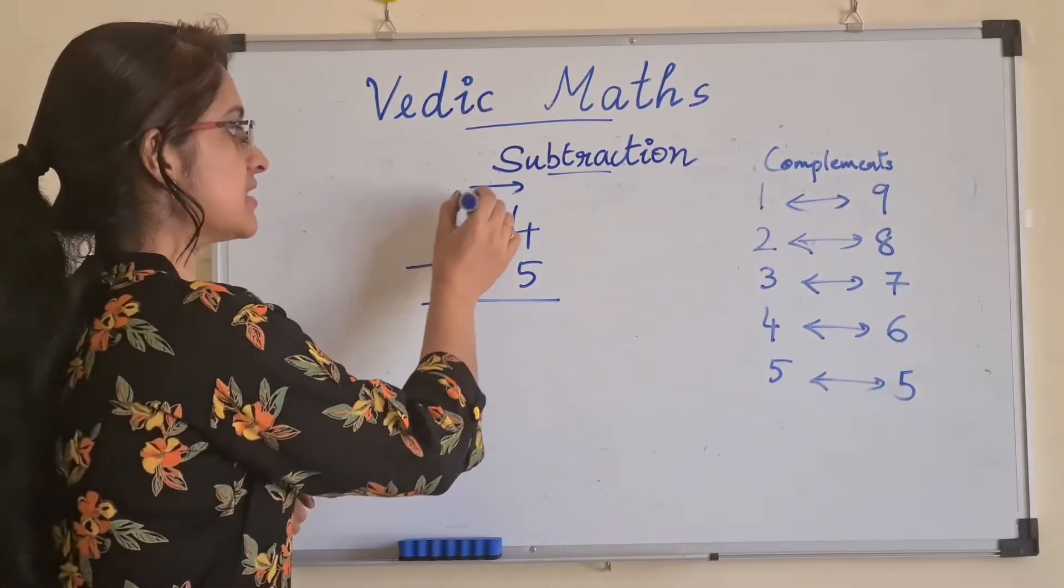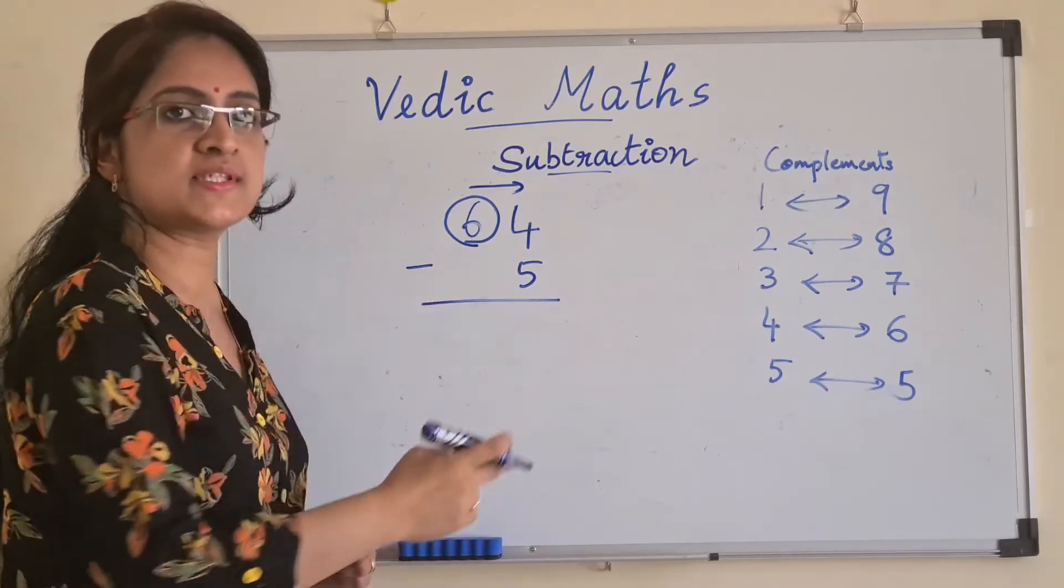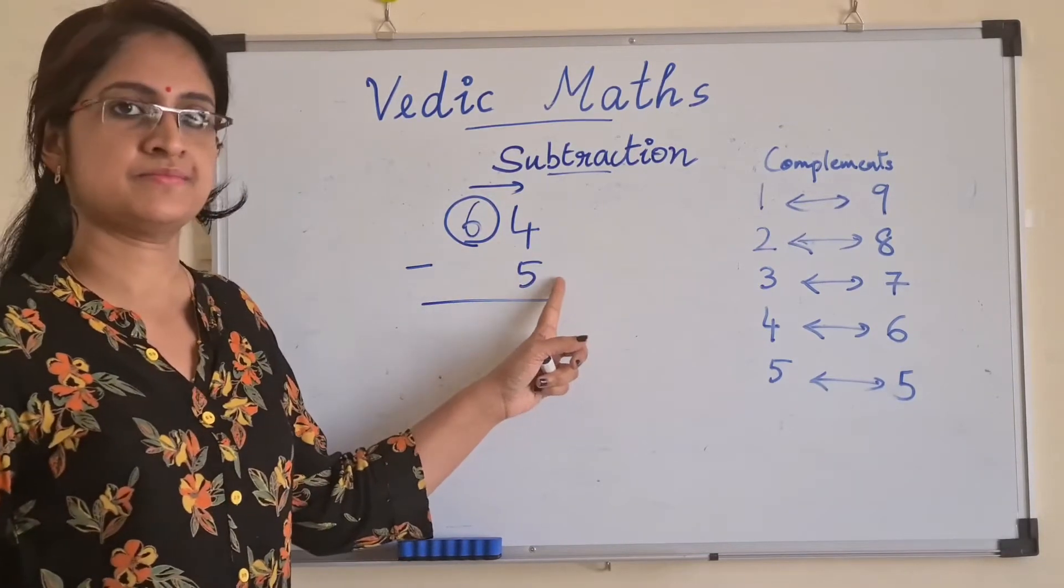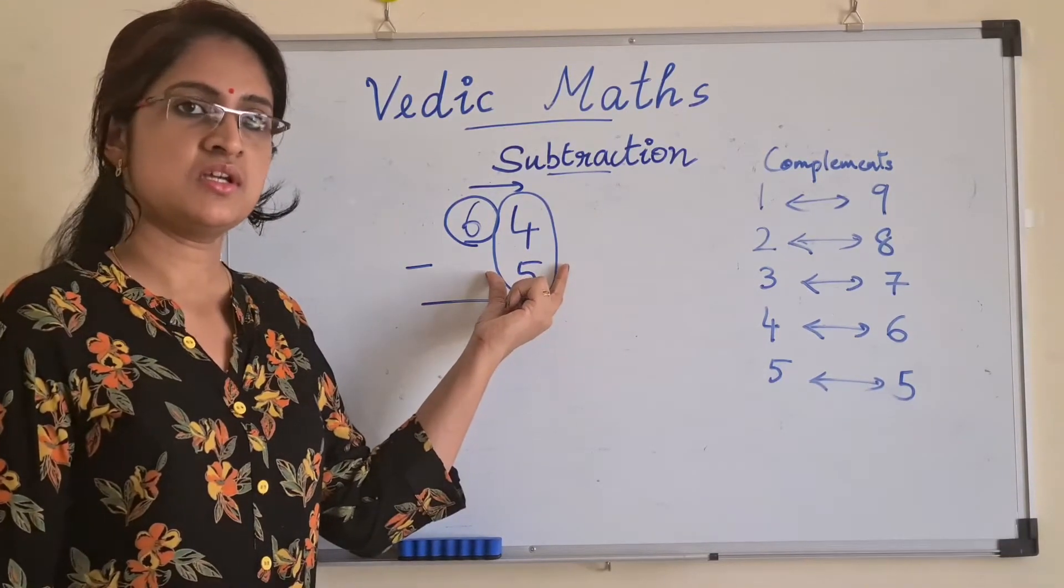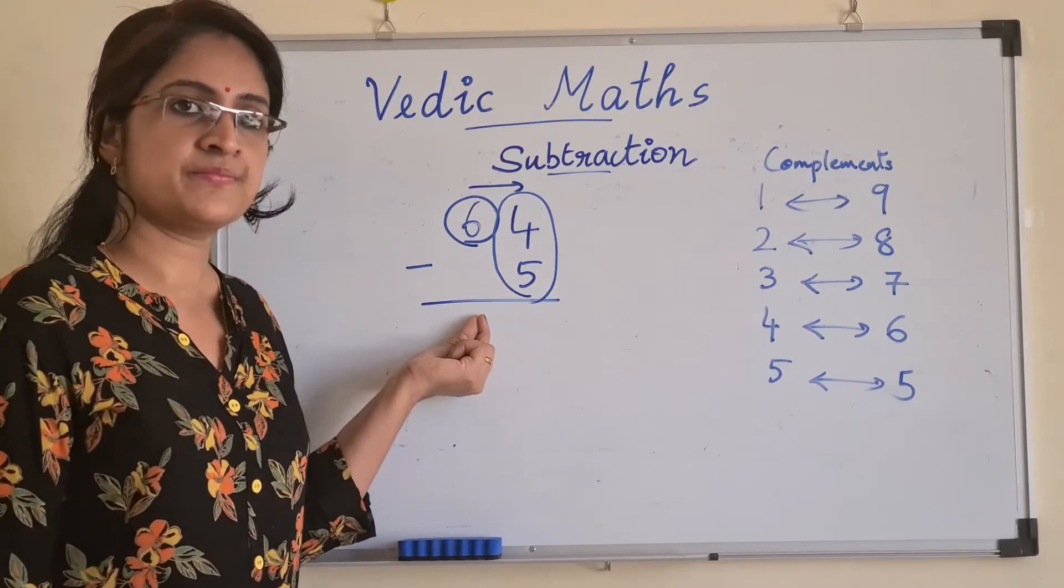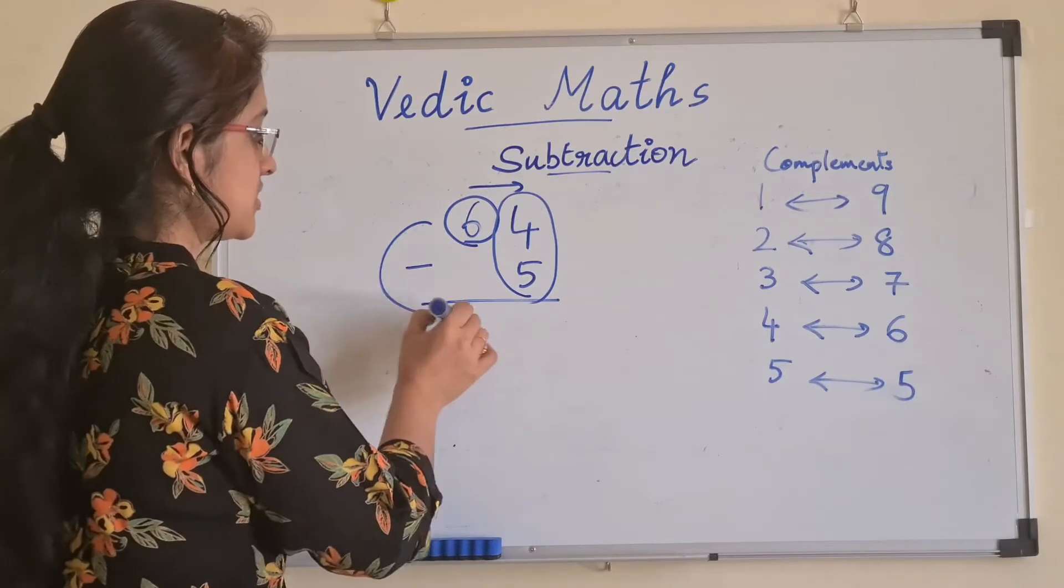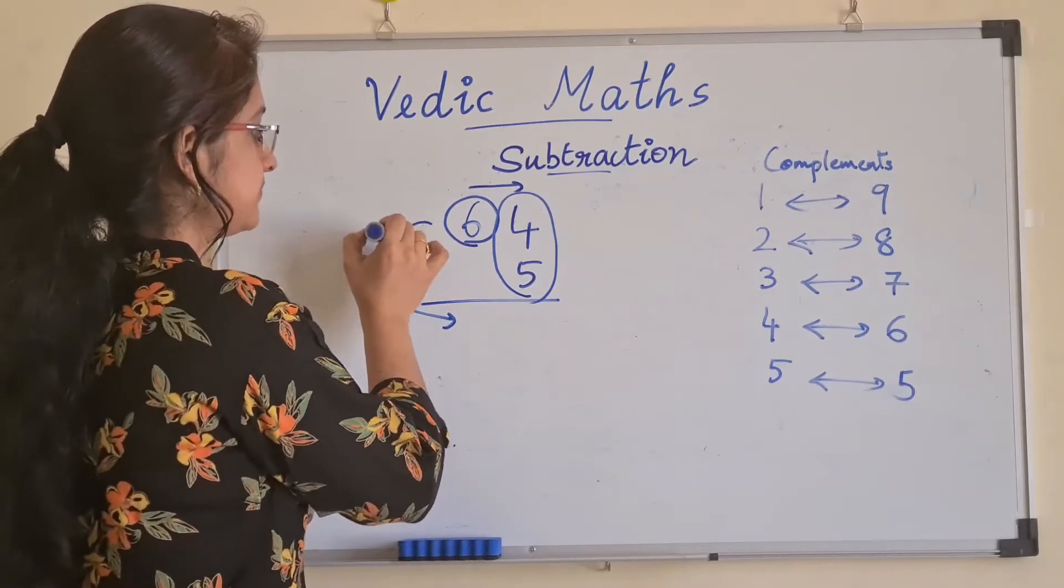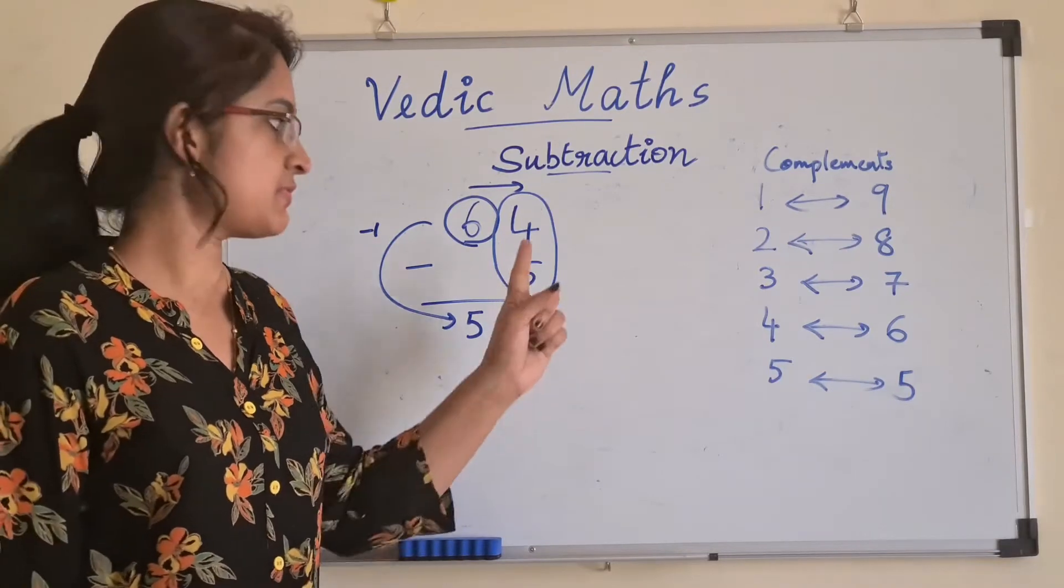Before writing 6 directly here, we are going to observe the next step. Since this is a mismatch combination, instead of writing 6 directly down here, you will subtract 1 from 6. So, 6 will become 5.